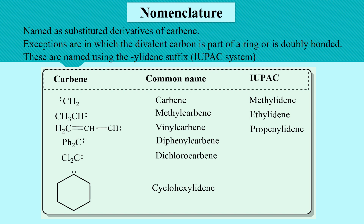The exception to this are carbenes in which the divalent carbon is part of a ring or is doubly bonded. These are named using the 'ylidene' suffix. For example, cyclohexylidene and vinylidene. The common names are derivatives of carbene such as methylcarbene, vinylcarbene, and diphenylcarbene. Their IUPAC names are: carbenes containing one carbon are called methylidene, two carbons are ethylidene, and three carbons with a double bond are called propenylidene.